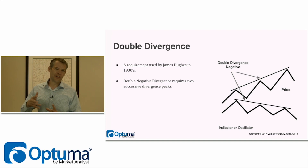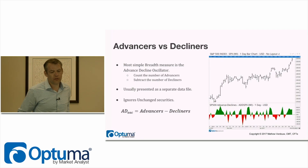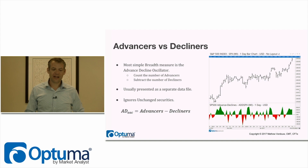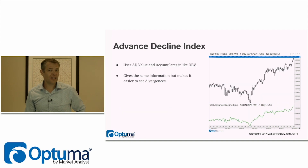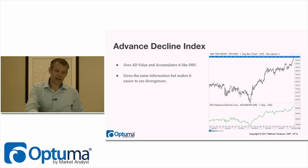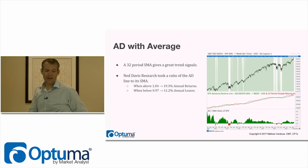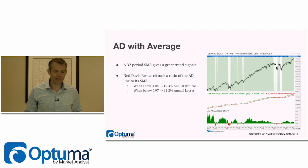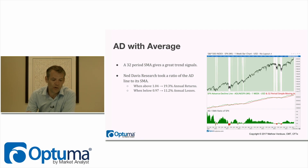It's always a fine line — you've got to test these things for yourself. So: advances versus decliners is counting the advances and subtracting the decliners to create an oscillator. The advance-decline index accumulates those values, creating a line where the absolute value is meaningless — it's the relationship to price that matters. We can also take a moving average of that AD line, and then a ratio between the advance-decline and its simple moving average.